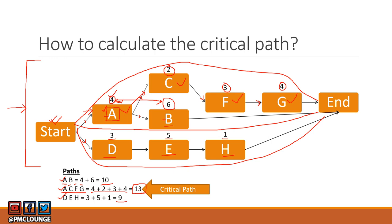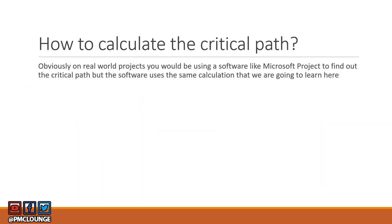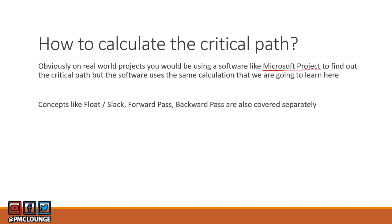On real-world projects you will be using software like Microsoft Project, because real projects have dozens or even hundreds of activities and you cannot calculate the critical path manually. The software calculates the critical path in the same way we just discussed. There are also related concepts like float, slack, forward pass, and backward pass — these are covered separately in the playlist linked in the description.